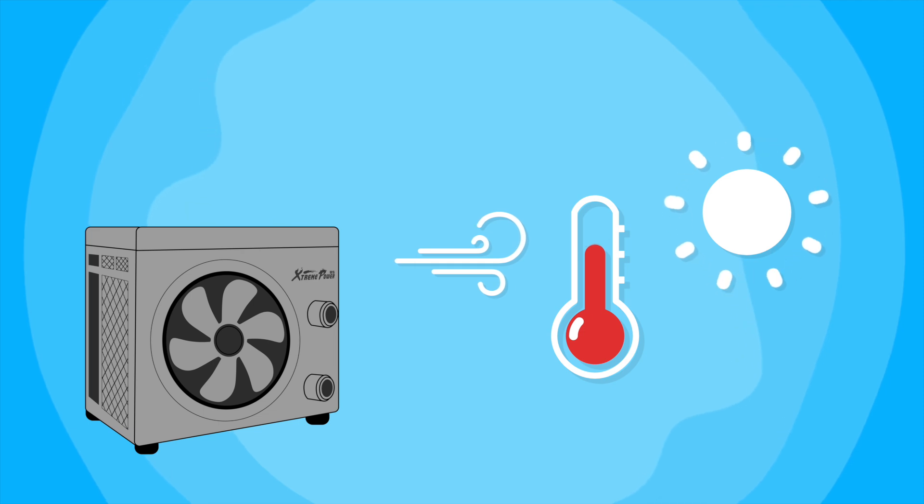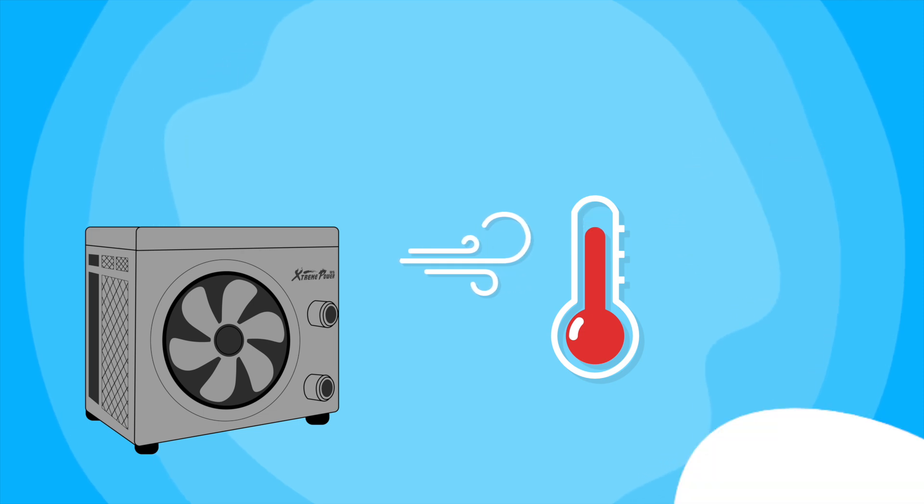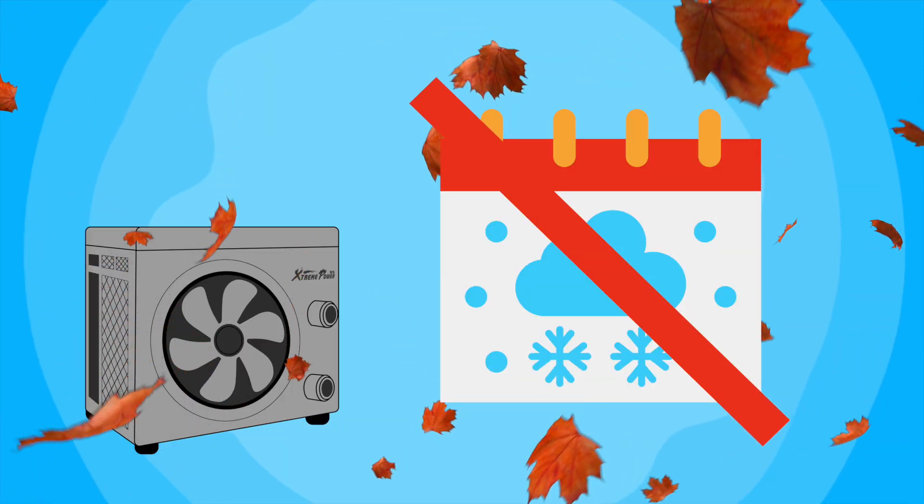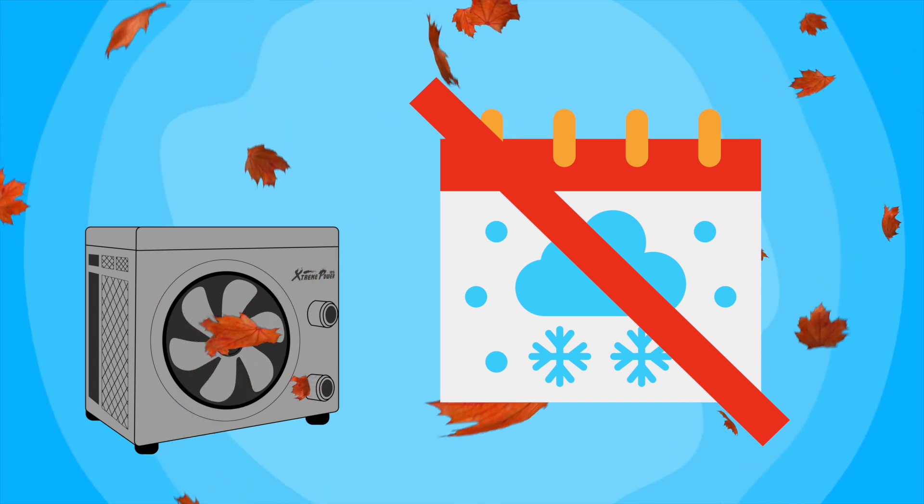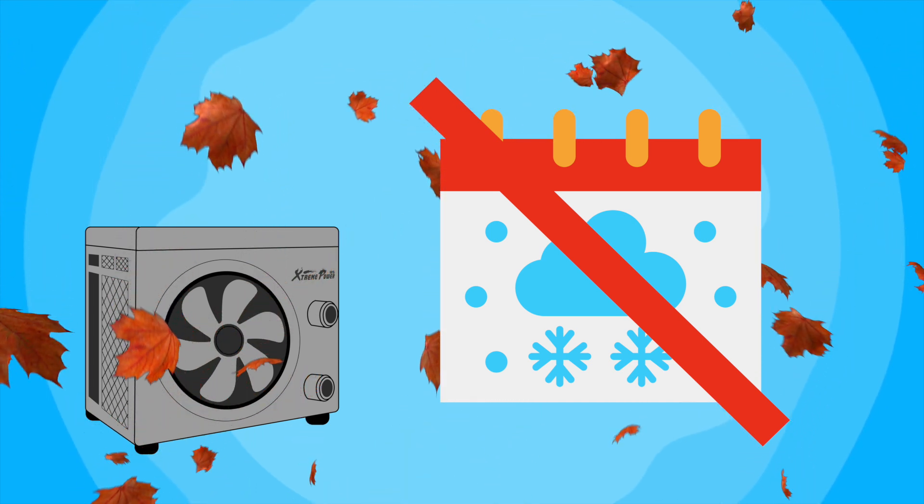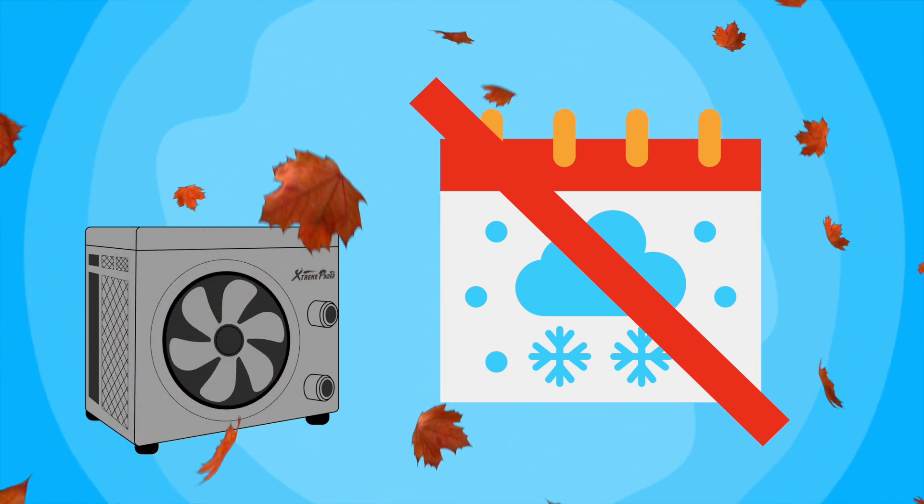However, it's important to note that the effectiveness of a pool heat pump is influenced by ambient temperature. In colder climates or during winter months, when the air temperature drops significantly, the heat pump may struggle to extract enough heat from the air to adequately warm the pool water. In such cases, alternative heating methods may be necessary to maintain comfortable water temperatures.